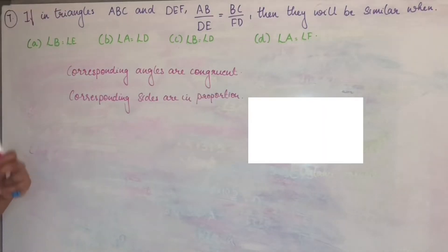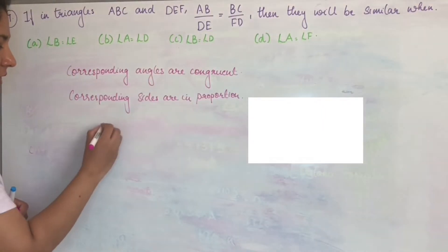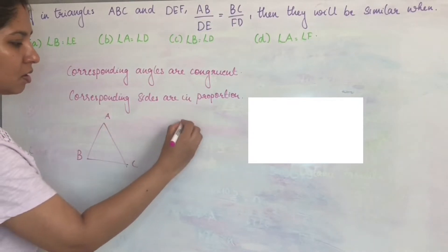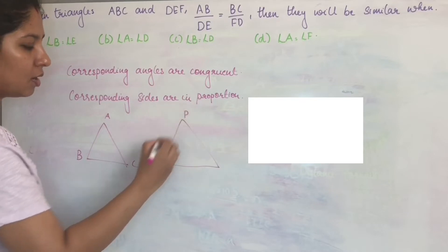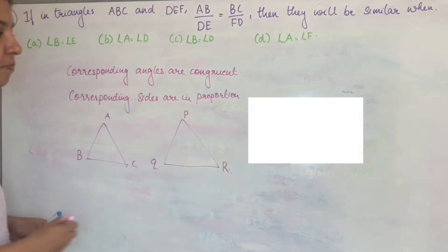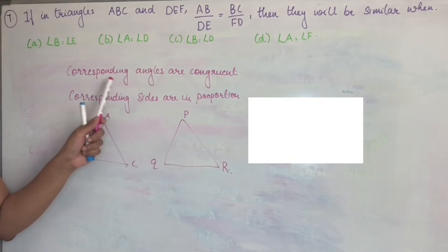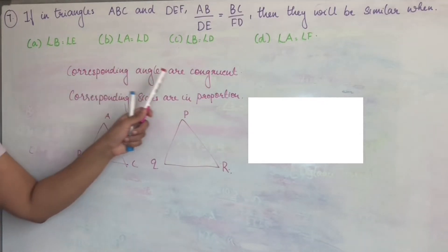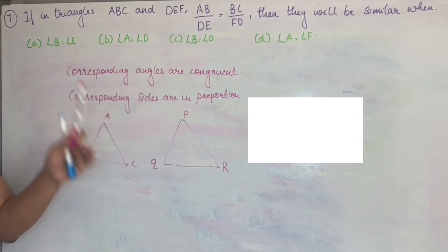Corresponding angles are congruent and corresponding sides are in proportional. Means, any triangle consider ABC, PQR. Triangle ABC is similar to triangle PQR. In the diagram condition, corresponding angles are congruent. That is equal. Corresponding sides are proportional.